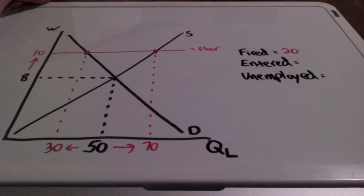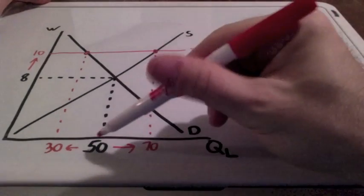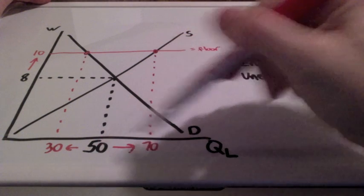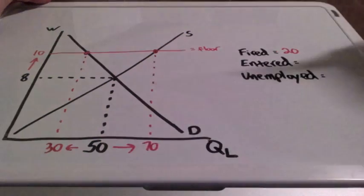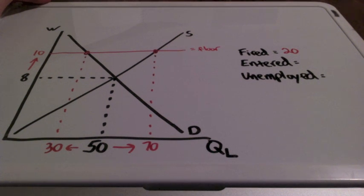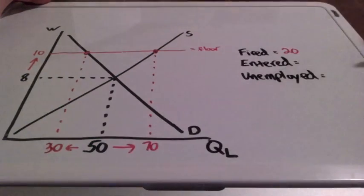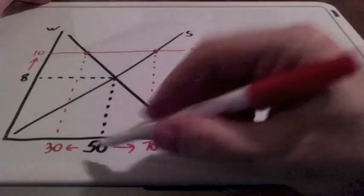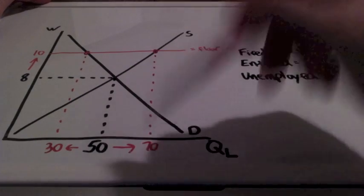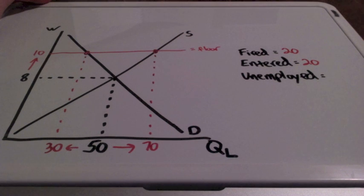What about the number of workers that would enter into the industry? Well, the equilibrium quantity was 50 and then it increased to 70 with this minimum wage increase. So we have an increase of 20 workers that entered the industry. 70 minus 50 equals 20.